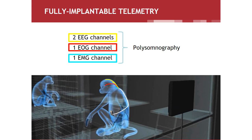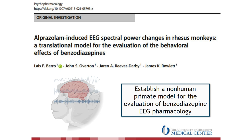To achieve that, we used a fully implantable telemetry model from Data Sciences International that had four channels. We chose to use two channels as EEG channels — one at a central derivation and the other at an occipital derivation — in order to capture the two main topographic regions where benzodiazepines induce specific spectral power changes based on human studies. We also used one electromyogram or EMG channel and one electrooculogram or EOG channel to have the same parameters of muscle tone and eye movement needed for polysomnography-based sleep scoring in monkeys based on the American Academy of Sleep Medicine scoring guidelines. With this recently published study, we aimed at establishing a non-human primate model for the evaluation of benzodiazepine EEG pharmacology.